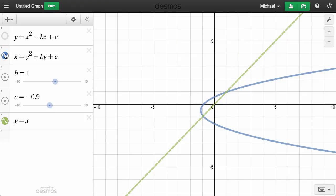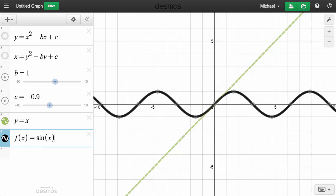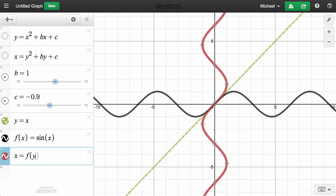Let's hide these graphs and explore one more pair. If you define a function using function notation, like f of x equals sine x, you can graph the inverse relation with this, x equals f of y.